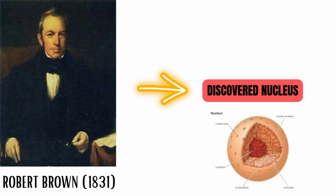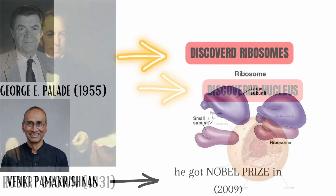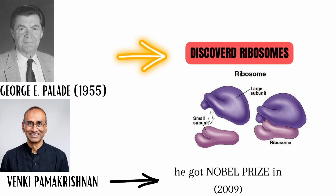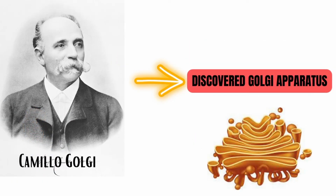Robert Brown in 1831 discovered the nucleus. George Emil Palade in 1955 discovered the ribosome. In 2009, Venkatraman Ramakrishnan received the Nobel Prize.